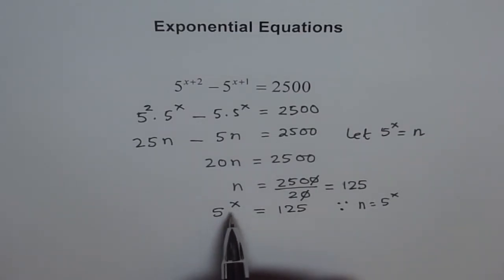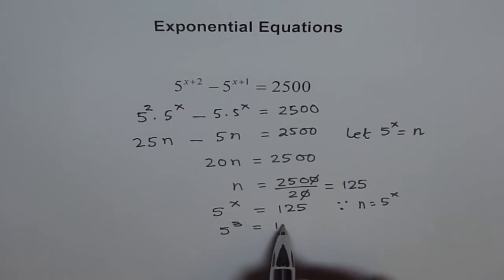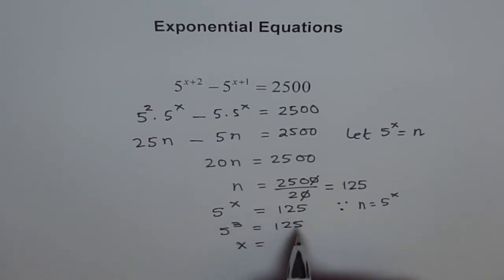Now from here, what power of 5 will give you 125? It is 3. Since we know that 5 to the power of 3 is 125, therefore we say x is equals to 3.